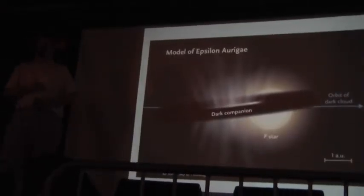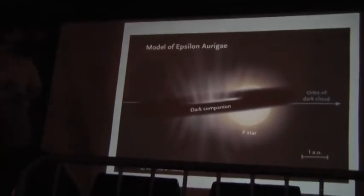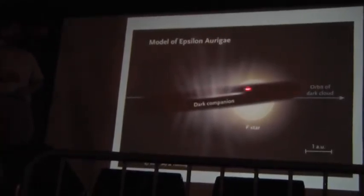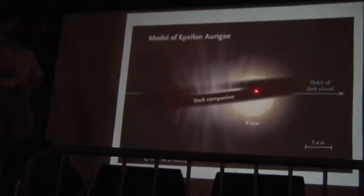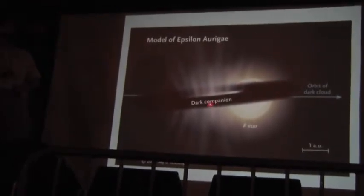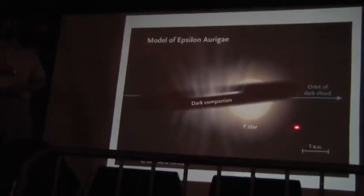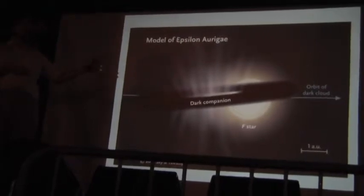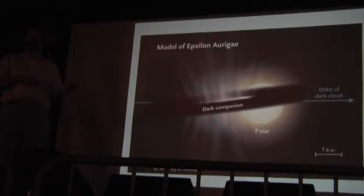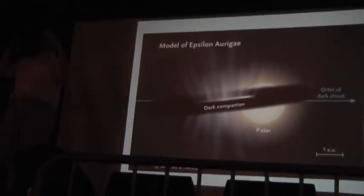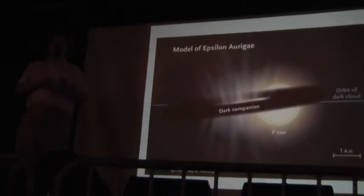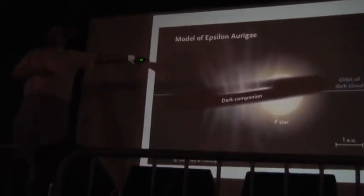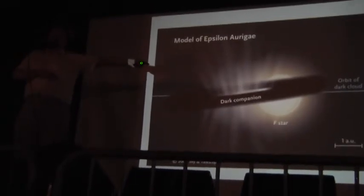All right, so, this is an artist's conception of what the Epsilon Aurigae system would look like if you were nearby. So, this would be our mystery companion here. We have no idea what's in this. And then this nice orbit, this nice dark cloud that obscures the primary star. Now, it should be noted that I went to a conference on this, and pretty much at the beginning of the conference, there was a paper delivered where they did an interferometric measurement of the star. They took various telescopes and tried to produce a picture using interference patterns, and they got almost exactly this. They got this finger-like protrusion through the surface of the F-star.